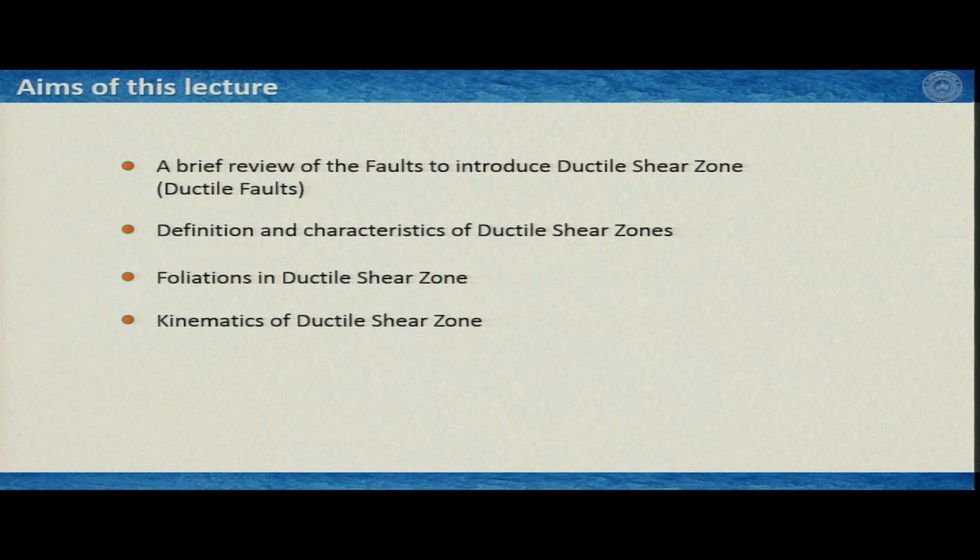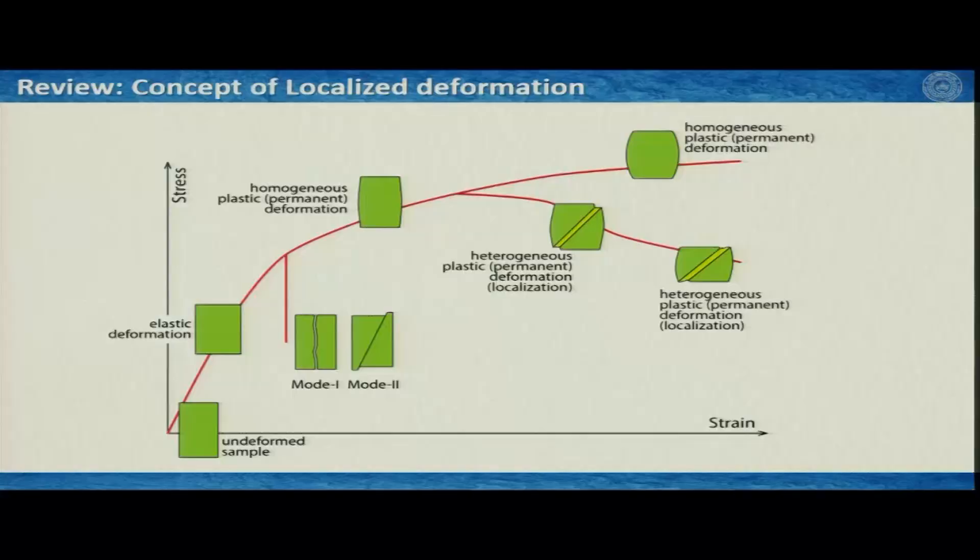Then we will define ductile shear zones and look at their different characteristics. After that we will see two very important features of ductile shear zones: foliations and kinematics. In the next lecture we will figure out the different microstructures and kinematic indicators of ductile shear zones — that is, how to know which way the shear zones moved past one another with respect to the undeformed rocks.